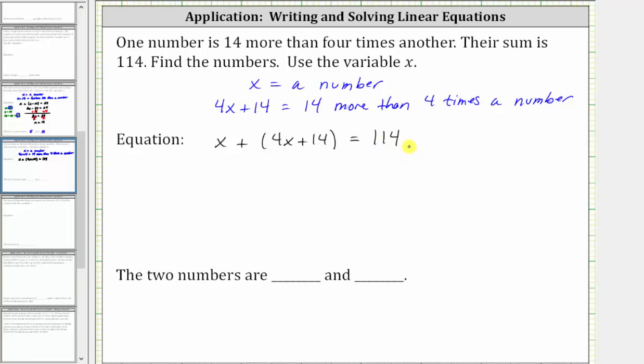And now if we solve the equation for x, we can determine both numbers. In order to solve for x, we need to isolate x on one side of the equation. The first step is to combine like terms on the left.